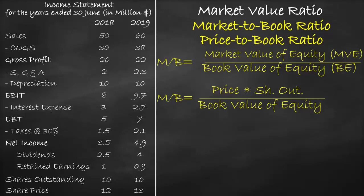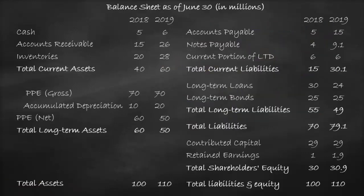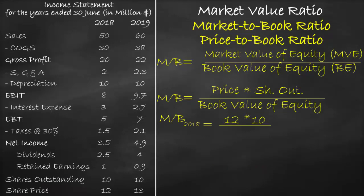Let's calculate the market to book ratio for the year 2018. We have the share price of $12 per share times shares outstanding of 10 million shares, divided by the book value of equity of $30 million, which is equal to 4 times.